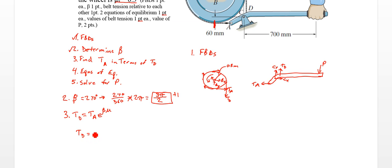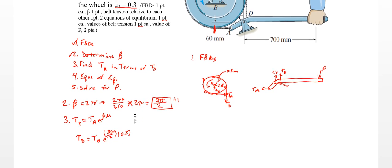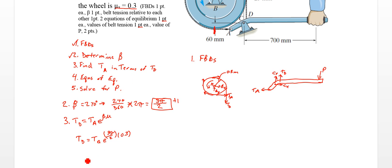So we'll fill in those values here. TD equals TA e to the 3π over 2 times 0.3. I believe that was our value. Let me go up here. Yep, there's 0.3. So TD equals 4.1112 TA. That's TD in terms of TA.